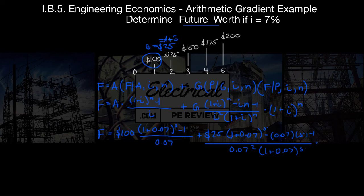And then last term is times 1 plus i, 0.07 to the n is 5. Wow, that's a handful.